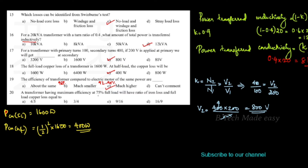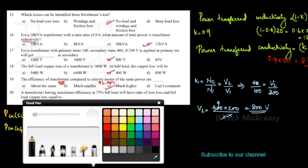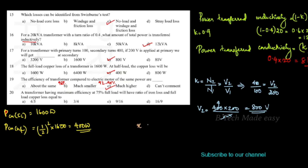A transformer having maximum efficiency at 75% full load will have a ratio of iron loss to full load copper loss of how much? At maximum efficiency, the fractional load X equals the square root of iron loss (Pi) divided by full load copper loss (Pcu). Here X = 3/4, so Pi/Pcu = (3/4)² = 9/16. The correct answer is 9/16.